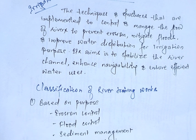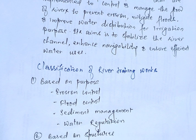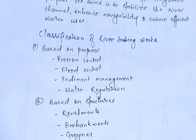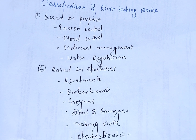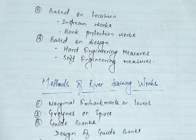The classification of river training works can be based on purpose: erosion control, flood control, sediment management, and water regulation. Based on structures, they can be revetments, embankments, groynes, dams and barriers, training walls, channelization, and dikes. Based on location, they can be in-stream works and bank protection works, and based on design they can be hard engineering or soft engineering measures. Detailed notes are mentioned in the description section of this video.